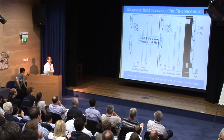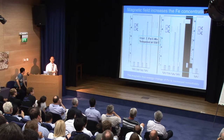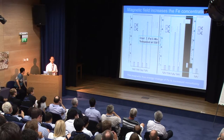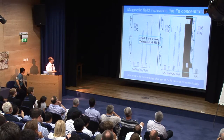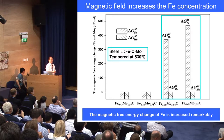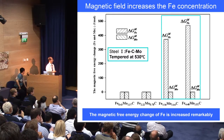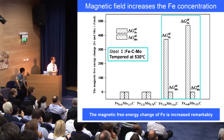Regarding the concentration, we also calculate magnetic free energy for iron atoms and molybdenum atoms. The magnetic free energy change for iron atoms is much larger than for molybdenum atoms. So the concentration of iron atoms is much larger than the molybdenum concentration in the presence of high magnetic field.